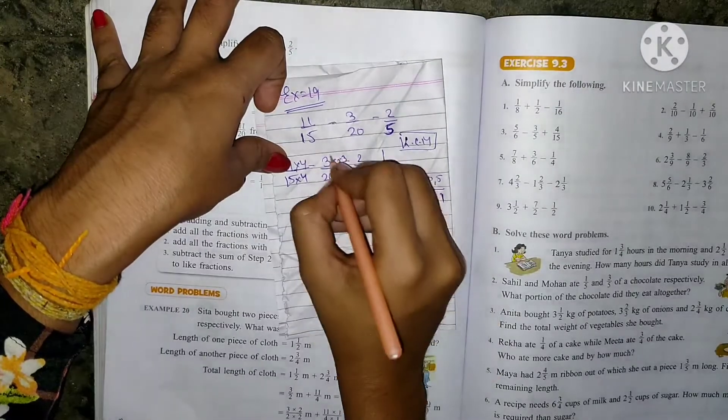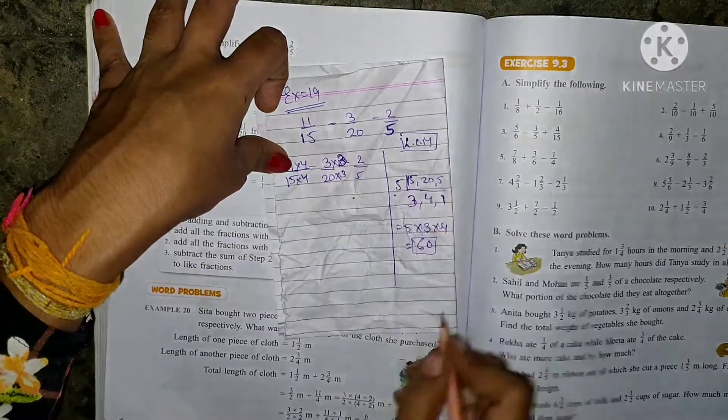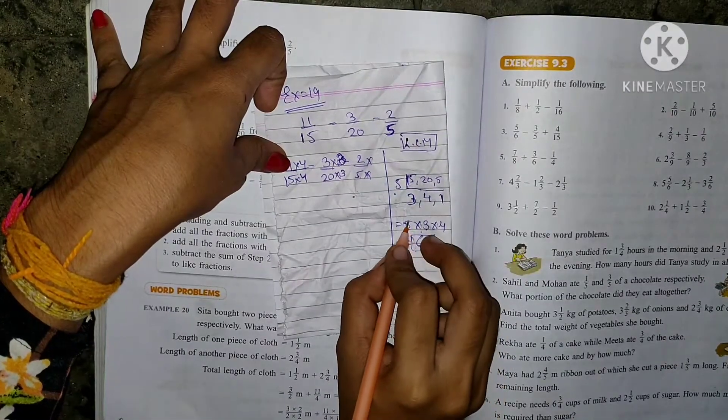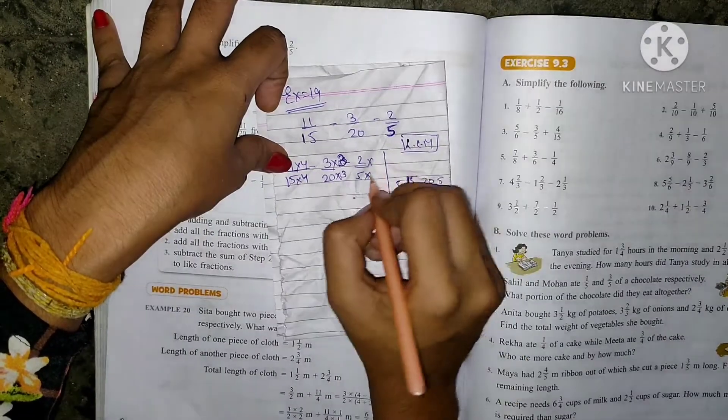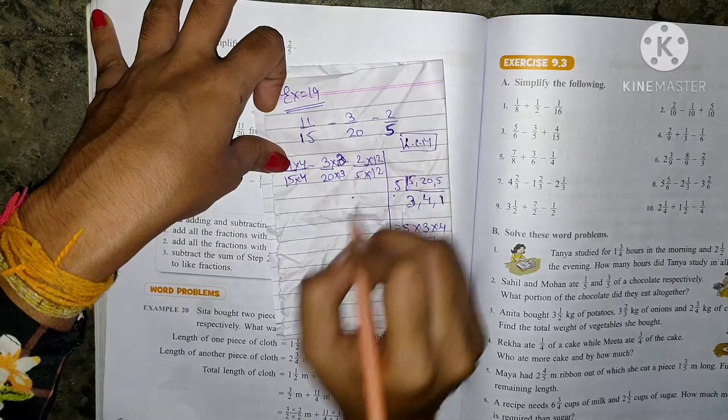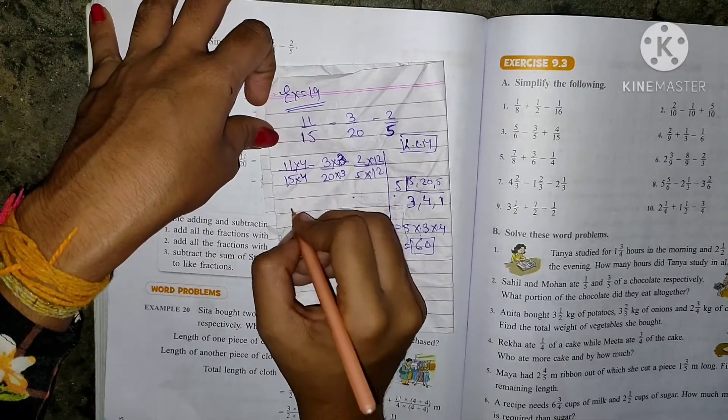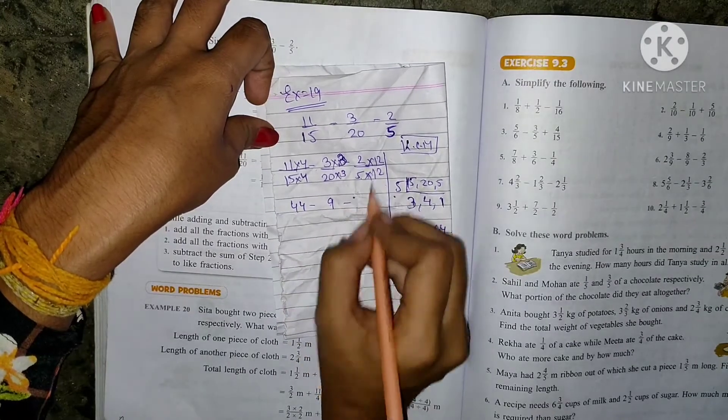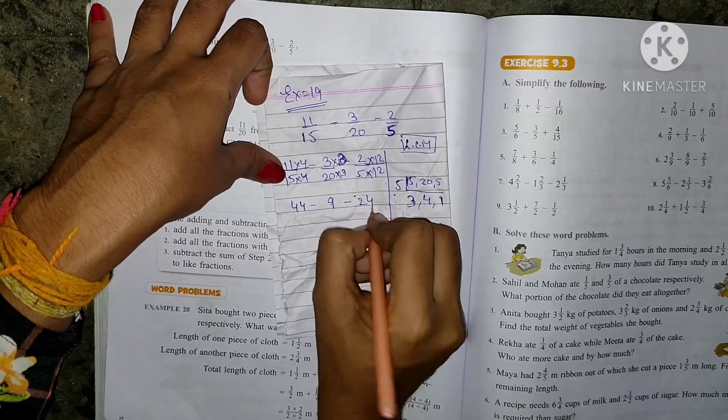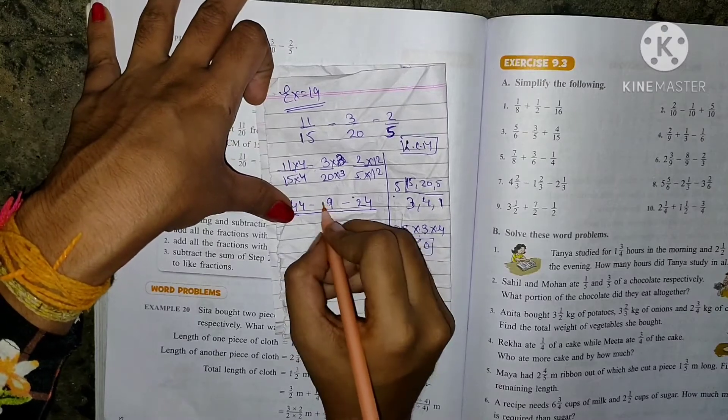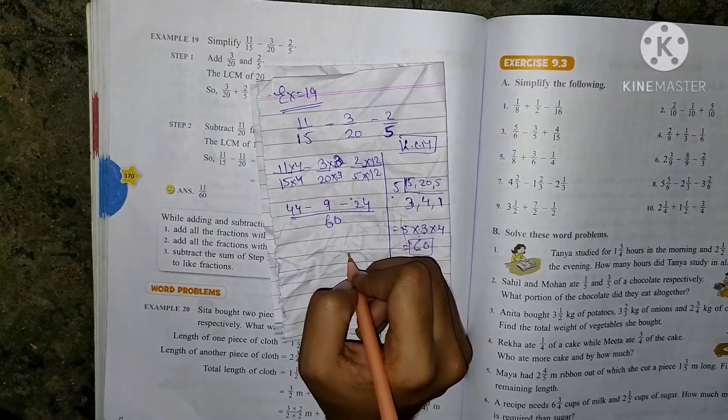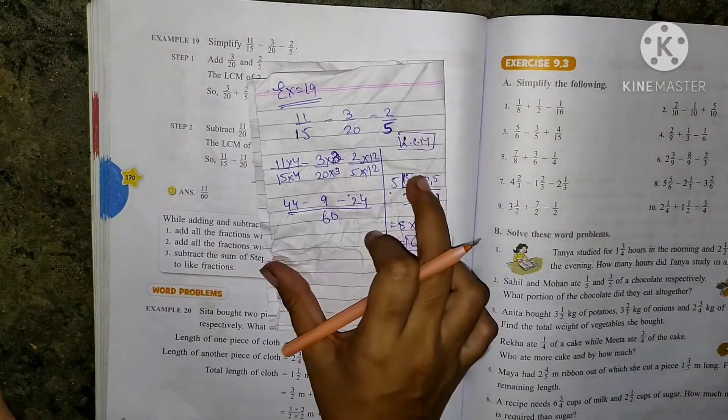Now, 5. So 5 is 5. What number is 3 and 4? So 3, 4 are 12. So we multiply this 3. 12, 11, 4 is 44. 3, 3 is 9. 2, 12 is 24. Now we do this. How much is the denominator? 60. So you know, denominator is 60. Okay?